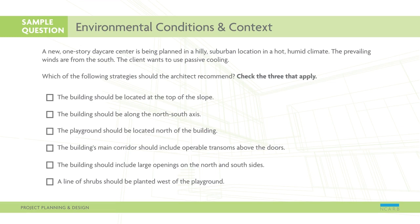The building should be located at the top of the slope. The building should be along the north-south axis. The playground should be located north of the building. The building's main corridor should include operable transoms above the doors. The building should include large openings on the north and south sides. A line of shrubs should be planted west of the playground.